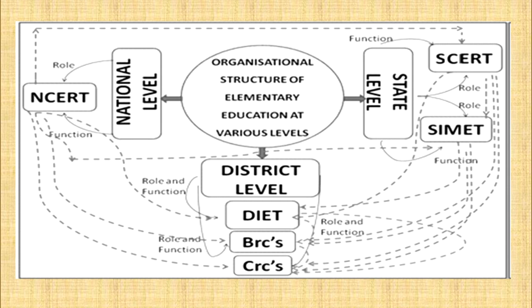If we look at the figure, it represents the organizational structure of elementary education at various levels. At the national level we have NCERT; at the state level we have SCERT, that is the State Council for Educational Research and Training, and another organization working at the same level is SIEMET. At the district level we have three organizations working: the first one is DIET, that is the District Institute of Education and Training, and the second one is BRC, that is the Block Resource Committee. These are the main administrative institutions that provide academic and resource support to elementary education at all levels in India.